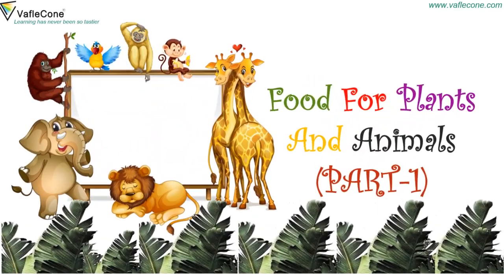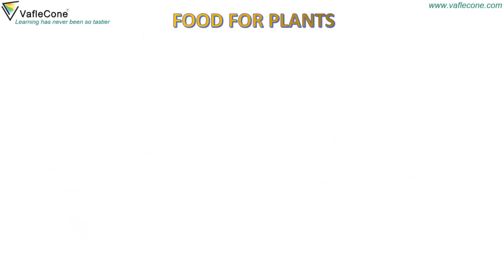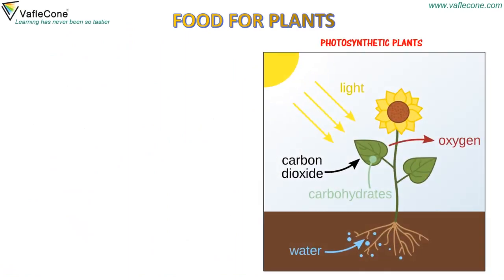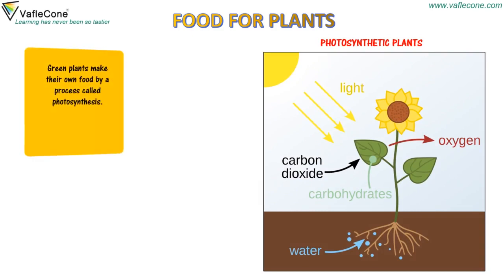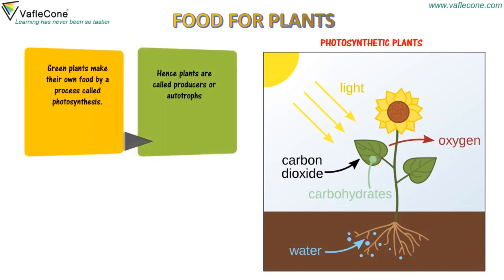Food for Plants and Animals Part 1: Food for Plants. Green plants make their own food by a process called photosynthesis. Hence, plants are called producers or autotrophs.